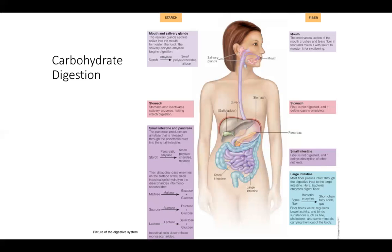As food moves through the small intestine, simple sugars begin to be absorbed across the intestinal cells and travel to the liver, where they are packaged and directed to be stored as glycogen, used for energy, or converted to fat. What is not broken down in the small intestine travels to the large intestine, where some fiber can be broken down by bacterial enzymes into short-chain fatty acids, allowing us to derive some calories. Some vitamins are also made by bacteria in the large intestine.